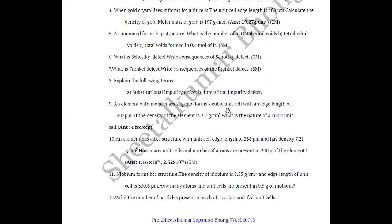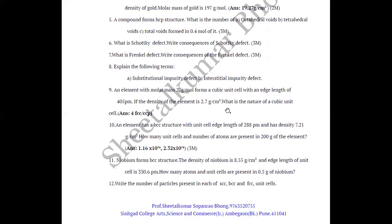Explain the following terms: (A) substitutional impurity defect, (B) interstitial impurity defect — each having one mark.